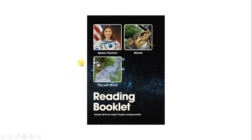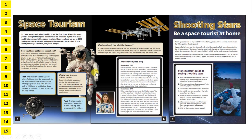In this video, we're going to go through the sample Key Stage 2 reading paper. We can see from the front cover of the reading booklet that we have three different texts and we'll need to answer questions on each of these. The title is Space Tourism, and the subheading is Shooting Stars: be a space tourist at home.